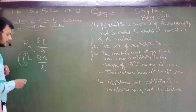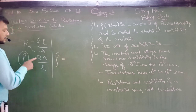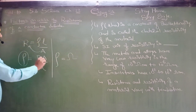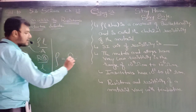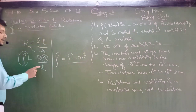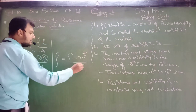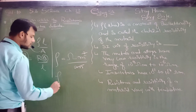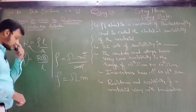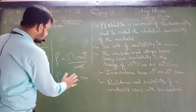Now I will teach you how to derive the unit of resistivity. Rho — resistivity. Unit of resistance is ohm. Unit of area is meter squared, divided by unit of length, which is meter. So one meter gets cancelled, and rho equals ohm meter. I hope, dear students, you are able to understand this theory.